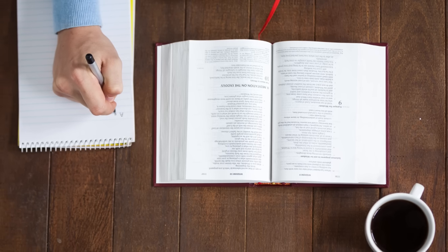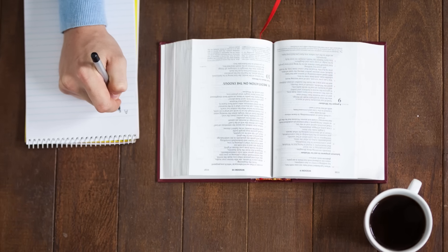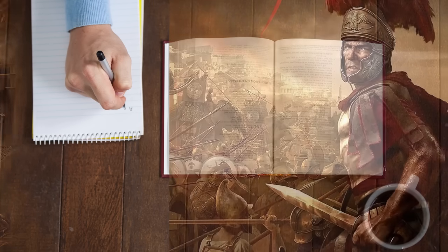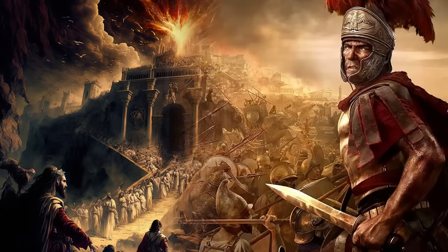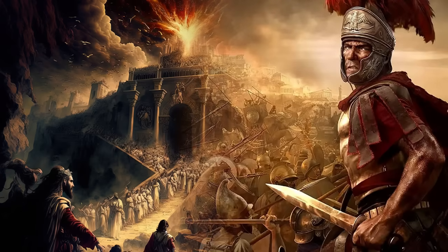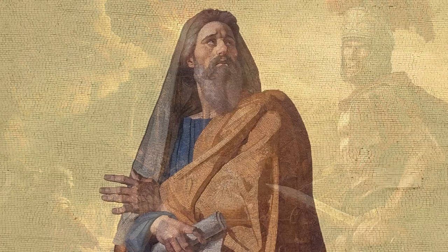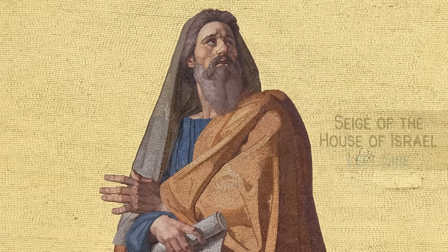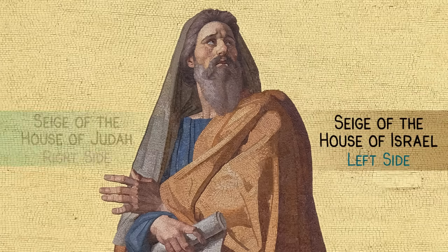Now let's begin answering and investigating those questions. Question number 1, studying Ezekiel 4, we asked: what is the same and what is different between the two sieges of Jerusalem, and why is it important? First, let's take a look at some of the differences. Number 1: Ezekiel lies on his left side as he portrays the siege of Jerusalem prophetically for the house of Israel, and on his right side for the house of Judah. This in itself indicates two separate sieges.